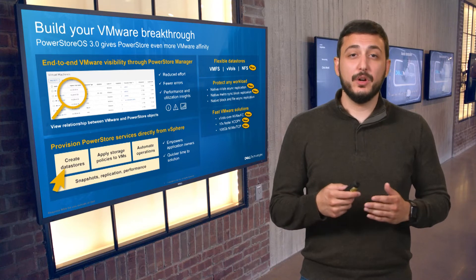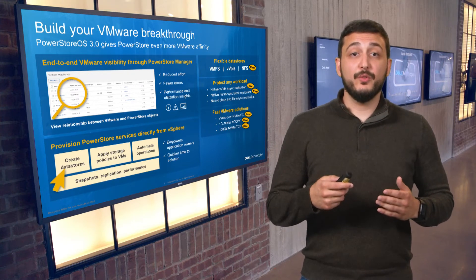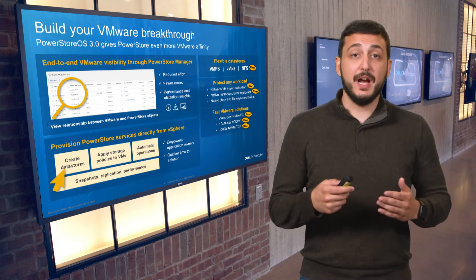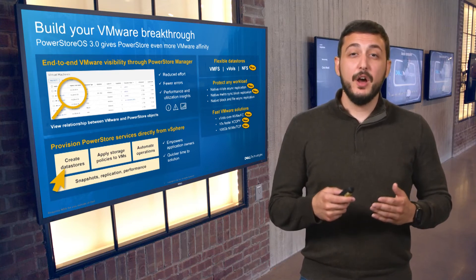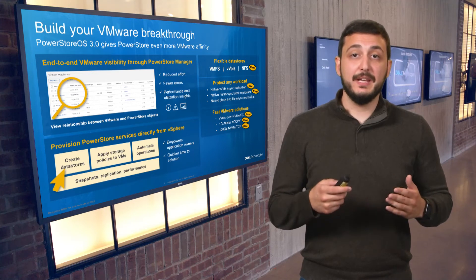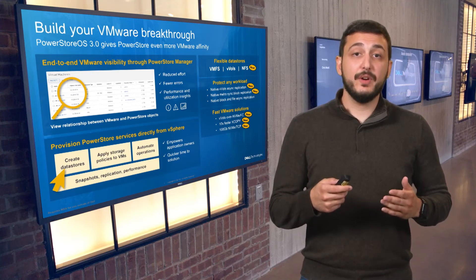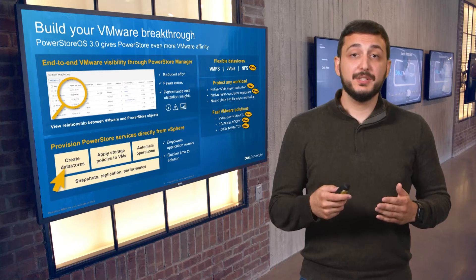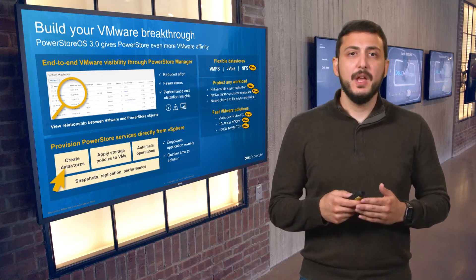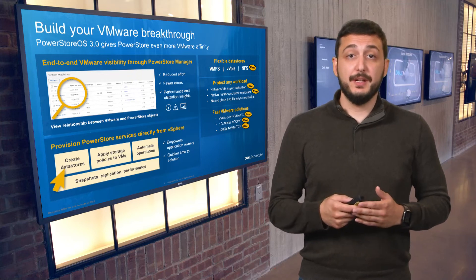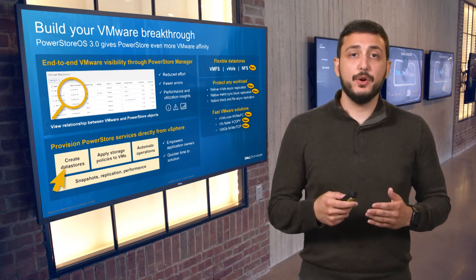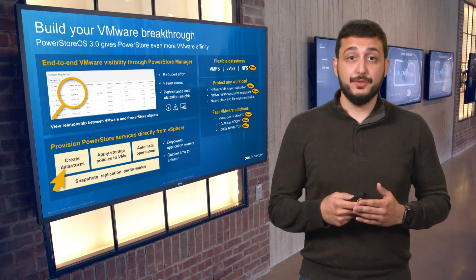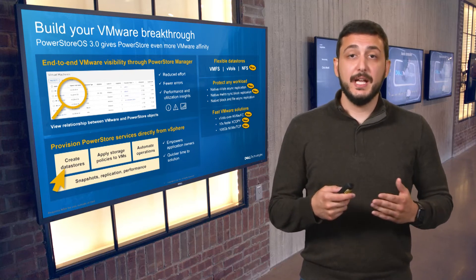In our 3.0 release, we're also announcing support for VVOLs over NVMe. Previously, VMware customers running VVOLs had to use standard Fiber Channel or iSCSI. Dell and VMware are working together as design partners on NVMe solutions. VVOLs over NVMe currently leverages PowerStore's NVMe over Fiber Channel capability, which VMware has supported since vSphere 7.0. We've also worked with VMware to co-engineer NVMe over TCP support in their recent 7.0 U3 release. And VVOLs over NVMe TCP will be introduced soon, since it shares much of the same foundation as VVOLs over NVMe FC.